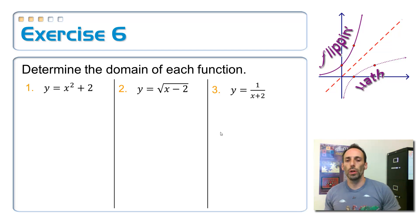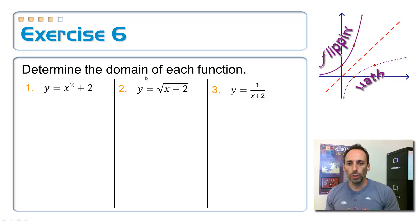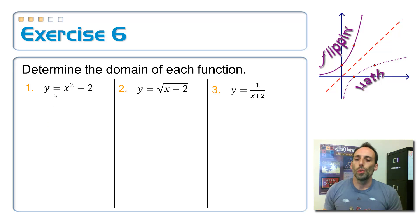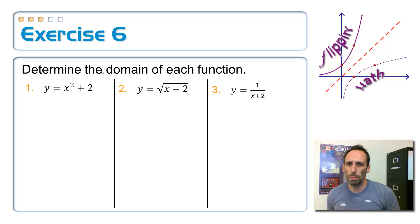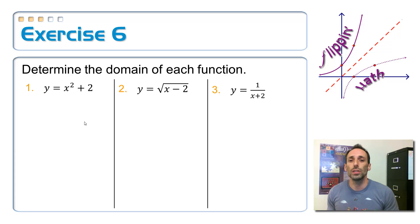Number one is a quadratic equation: y equals x squared plus 2. I'm only looking for the domain. What am I allowed to stick in for x? Or is there anything I'm not allowed to stick in for x? Look at that equation — is there anything you can't square? Can you square 5? Can you square negative 5? Square root of 5? Can you square pi? Is there anything you can't square? The answer is no. You can stick anything in for x — any real number. So the domain here is all real numbers.